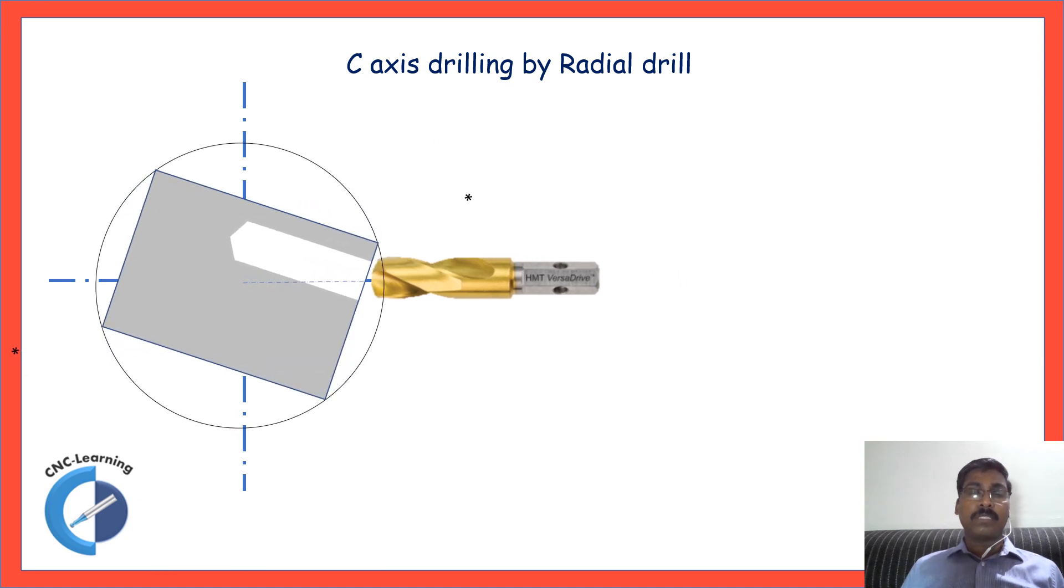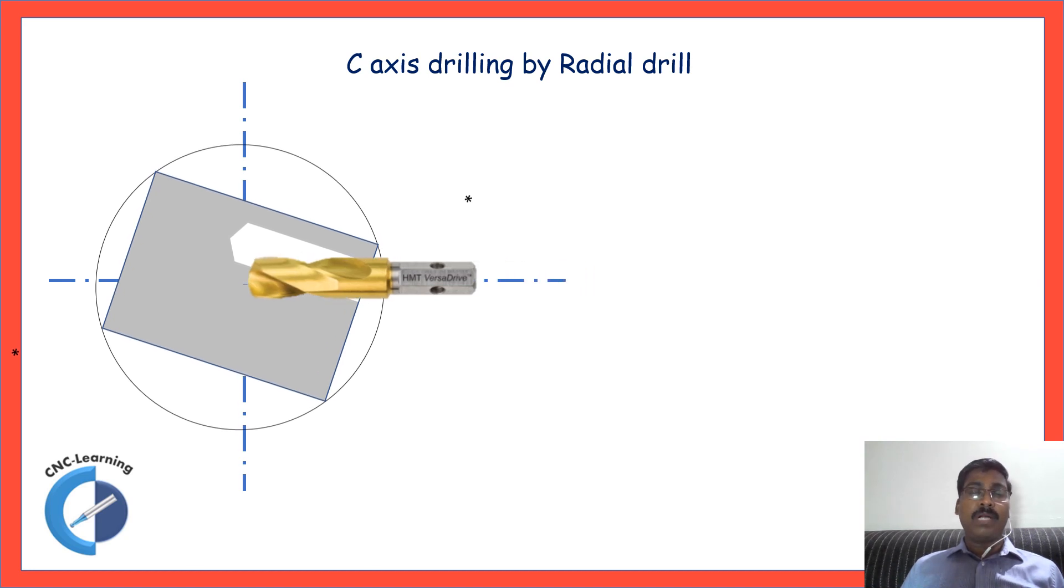Now, the position is aligned. You can notice that the drill cannot move up and down. The only way to align is moving the X axis and moving the C axis. So, now it is aligned to the hole center. And when we do the drilling, the drill will pass in an axis parallel to the center. So, it is aligned to the center always.